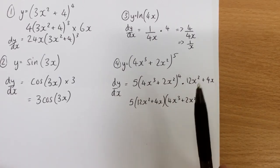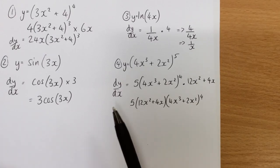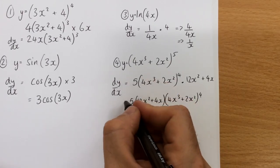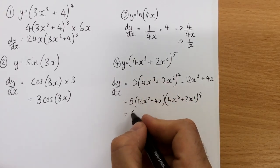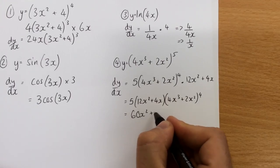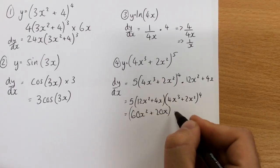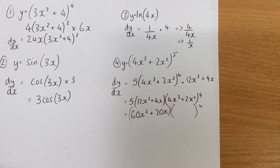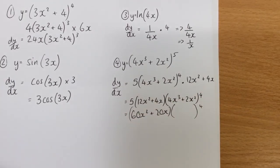Because if you wanted to simplify further, you'd have to expand that to the power of 4 first. You could, if you really wanted to, you could take it slightly one step further and just multiply the 5 in, so you get 60x squared plus 20x, and then that bracket to the power of 4, but you're probably better off leaving it on that line, because that's actually further factorised. And that is the chain rule.